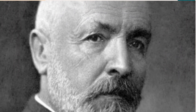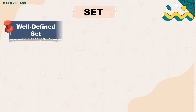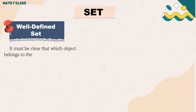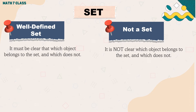The theory of sets as developed by George Cantor is being used in all branches of mathematics nowadays. According to him, a set is a well-defined collection of distinct objects of our perception or of our thought, to be conceived as a whole. When we say well-defined set, it must be clear which object belongs to the set and which does not.